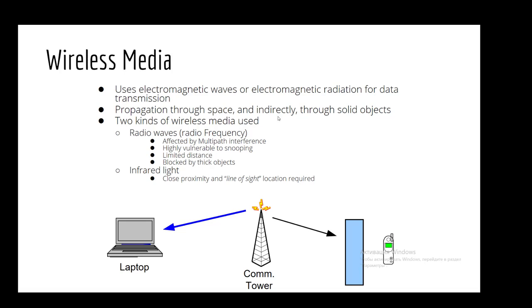Radio waves are affected by multipath interference, highly vulnerable to snooping, limited distance, and blocked by thick objects. Moreover, it has a big drawback which is infrared light, because it's close proximity and line of sight location required. In the picture you can see the function of wireless media and how it works.